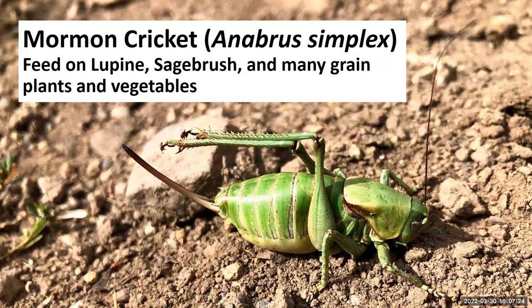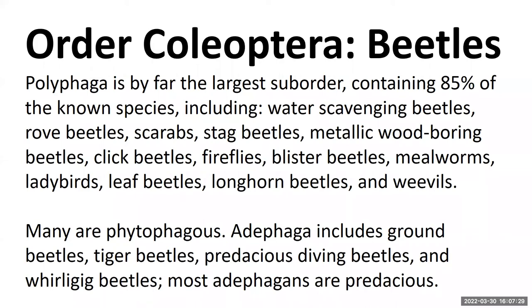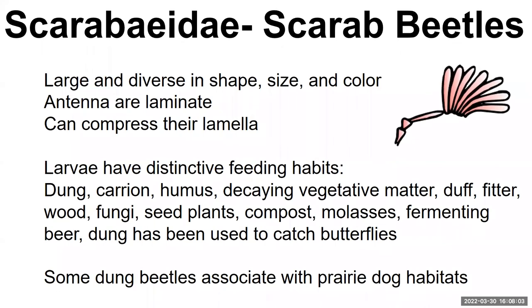Now moving to Coleoptera — beetles. There are many types of beetles in the desert, and it was profound to me while making this presentation just how much biodiversity there is — birds, reptiles, insects, plants — this is a wonderful ecosystem on Earth and I'm grateful we can be close to deserts. We'll talk about scarab beetles, a really big group: some feed on dung, some on decomposing matter like carrion, some on humus, decaying vegetative matter, wood, fungus, and seeds — very broad diversity.